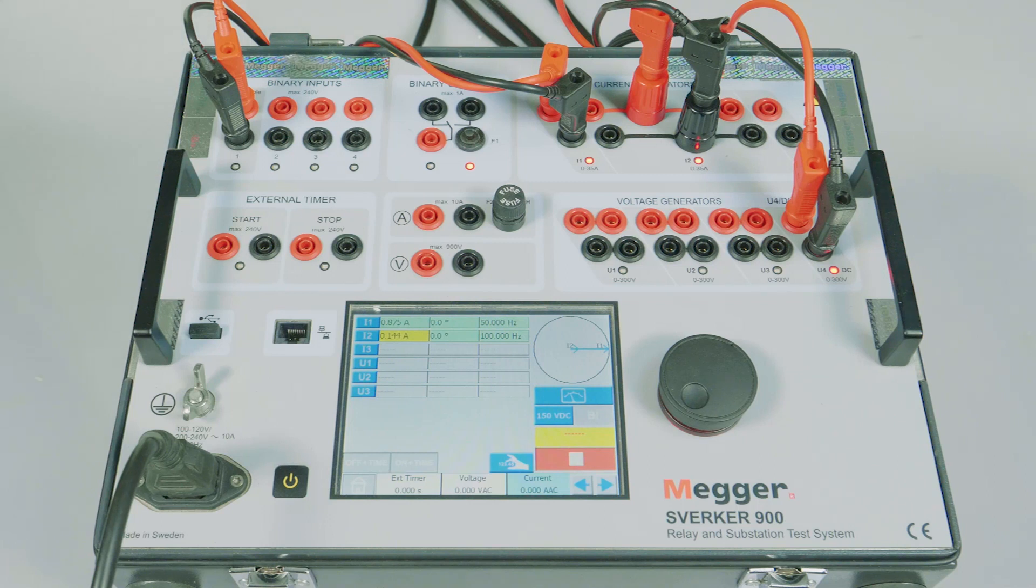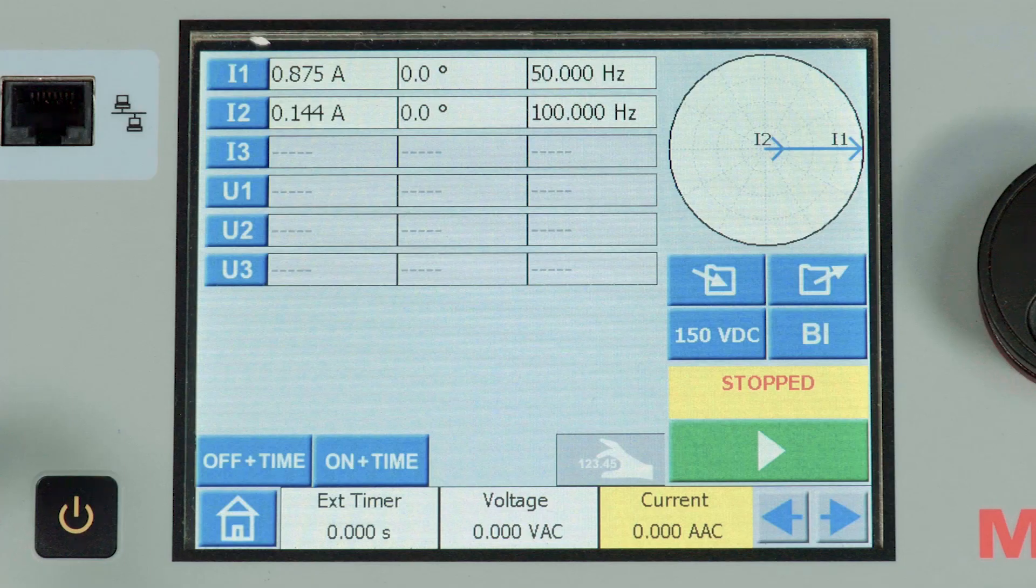This test confirms that the relay is operating when the second harmonic content is less than 15% and blocking when the second harmonic content is more than 15%.